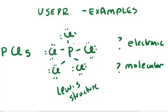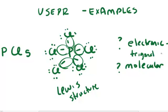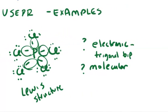Then you count the number of regions of high electron density, and in this case there's one, two, three, four, five regions of high electron density on the central atom. We predict the electronic structure for five regions of high electron density to be trigonal bipyramidal, based on the fact that the regions of high electron density are going to arrange themselves in space as far apart as possible.